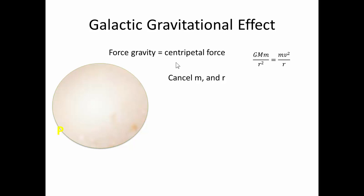Now we can simplify this. We can cancel m and we can cancel r. So we end up with GM over r is equal to v squared.